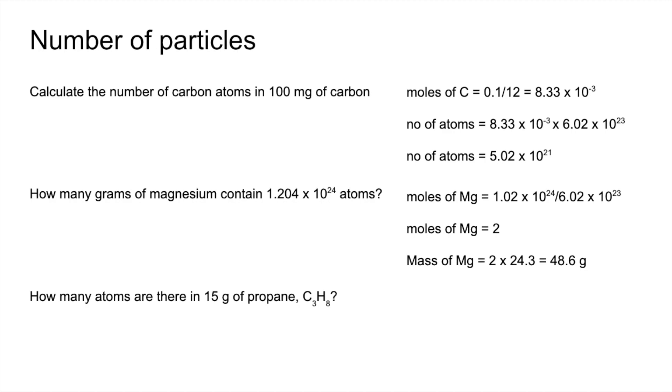And the final one, how many atoms are there in 15 grams of propane? So it's a bit like the first one, but there's a catch towards the end of this. So the first thing I'm going to do is work out how many moles of C3H8, how many moles of propane we've got. So that's just mass over MR, 15 over 44. So we've got that many moles of propane. So if we then multiply that by Avogadro's number, we can work out how many molecules of propane we've got.